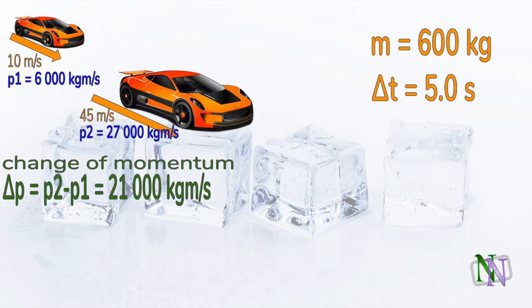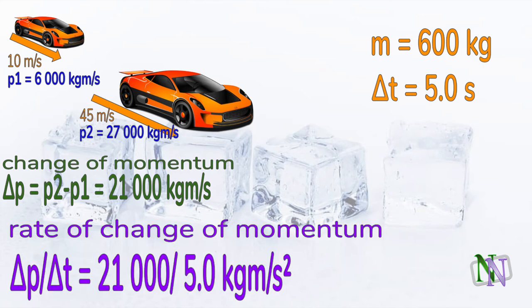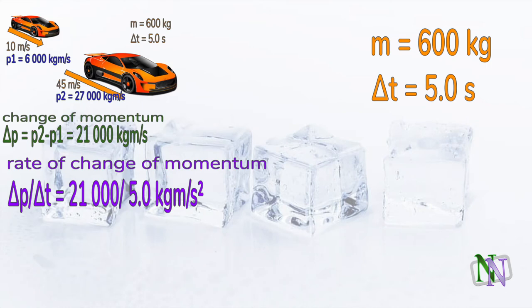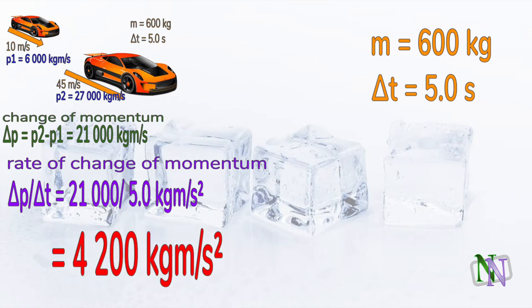Since we also know that the time taken to accelerate is 5 seconds, then we can find the rate of change of momentum. We divide the change, 21,000, by the time taken, which is 5 seconds. And the result is 4,200 kilogram meters per second squared.